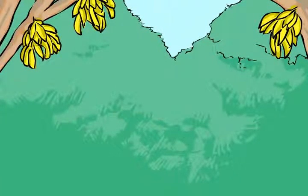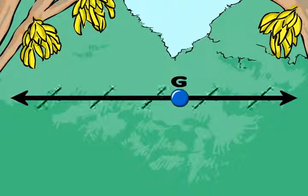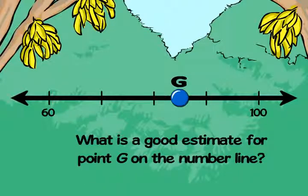Sometimes we need to identify a point between two marks. No problem. We use the same three steps and then one more. Try this. What is a good estimate for point G on the number line?